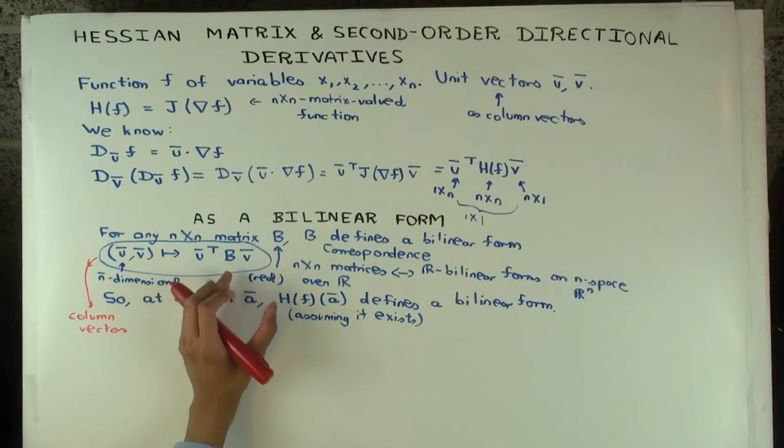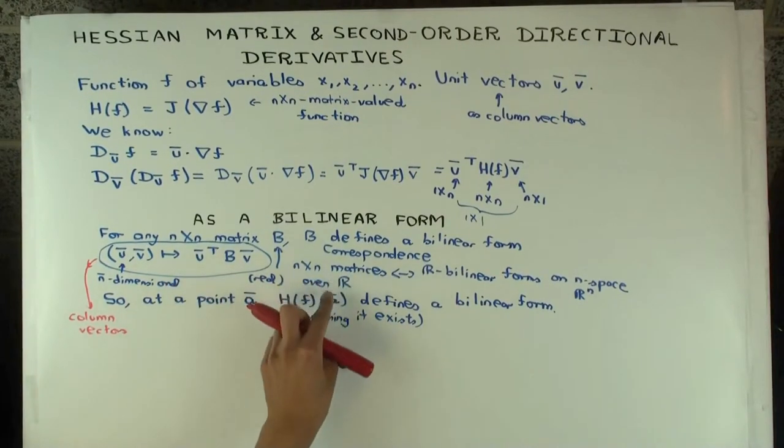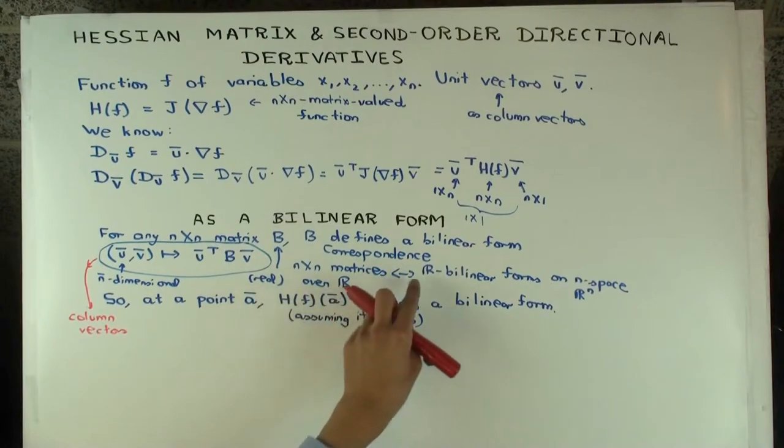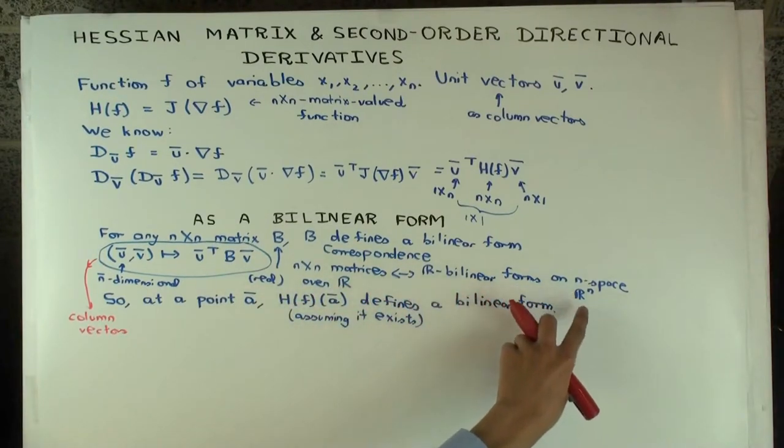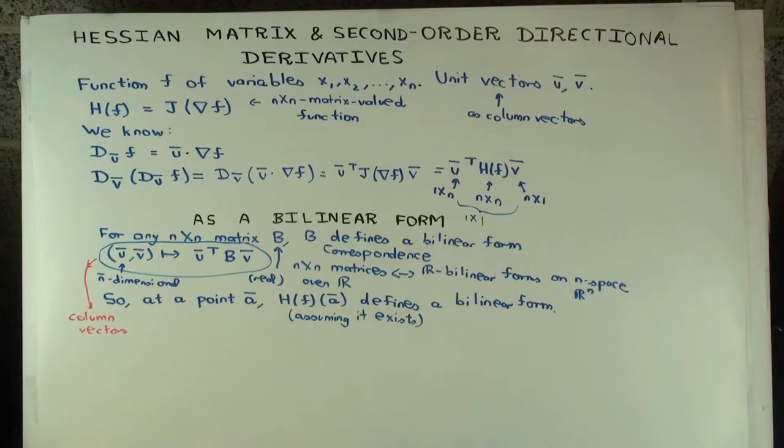And conversely, any bilinear form you can think of on R^n comes from a matrix, and moreover that matrix is unique. So there's a correspondence between n cross n matrices over the reals, and R bilinear forms. That's just saying bilinear forms on n dimensional space. You can sort of go back and forth between a bilinear form and a matrix.